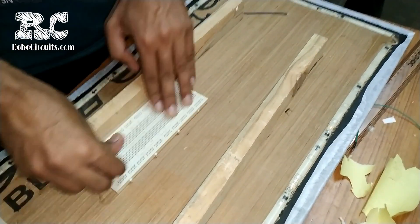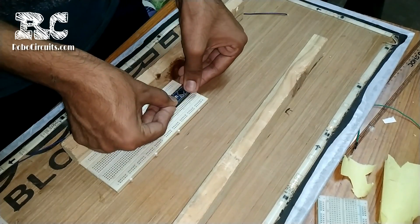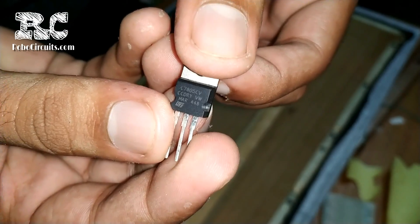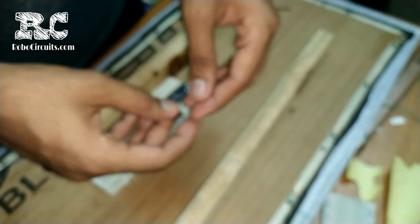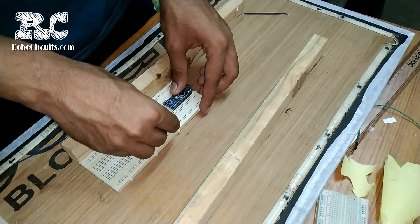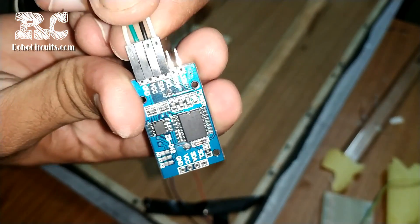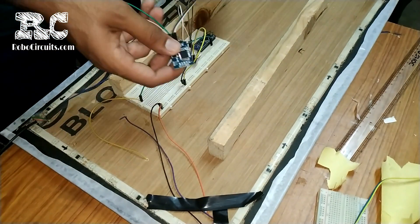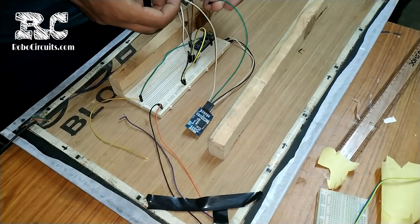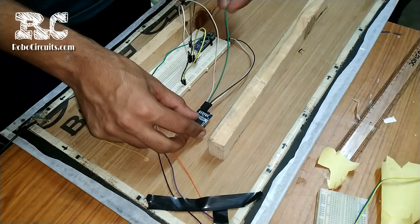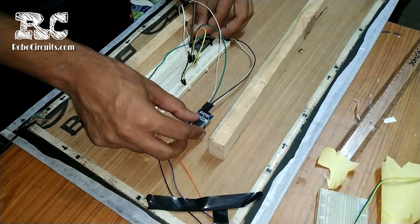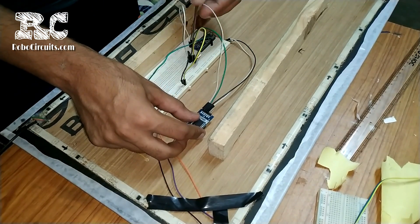Then I fixed a breadboard behind the board and pushed an Arduino Nano behind it. I used a 7805 voltage regulator to convert 12V into 5V that is suitable for our Arduino. Then I took an RTC DS3231 real time clock and connected it with the Arduino. I connected VCC to 5V, ground to ground, SCL to A5, and SDA to A4 of the Arduino.